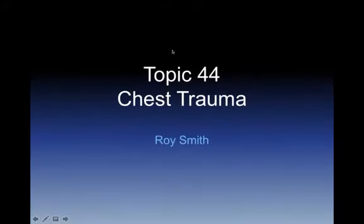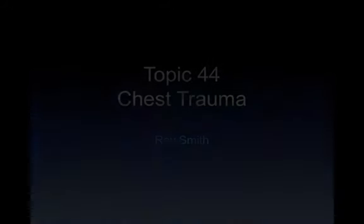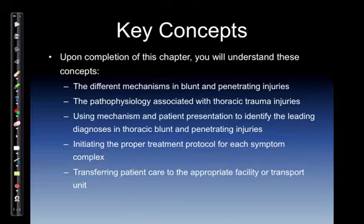This is topic 44, chest trauma. Upon completion of this chapter, you will understand the different mechanisms of blunt and penetrating injuries, the pathophysiology associated with thoracic trauma injuries, using mechanisms and patient presentation to identify leading diagnoses in thoracic blunt and penetrating injuries, initiating the proper treatment protocol for each symptom complex, and transferring patient care to the appropriate facility or transport unit.